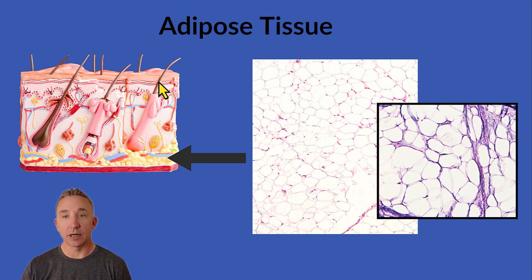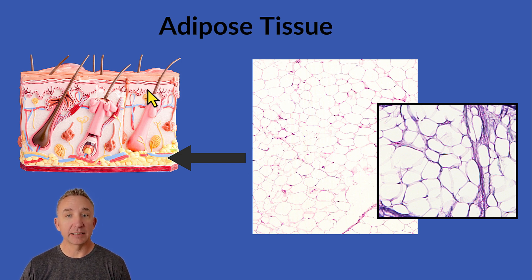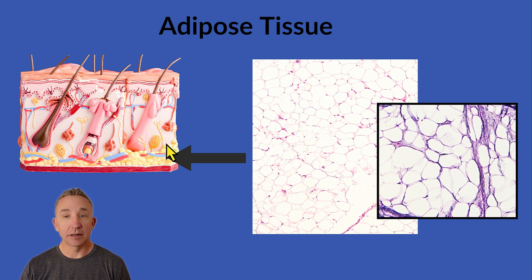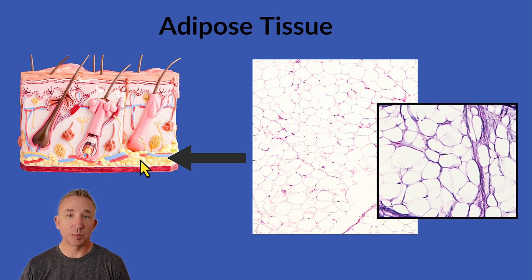We learned our epidermis is stratified squamous epithelium. We learned that the dermis contains areolar connective tissue at the papillary layer. In the reticular layer, we learned that's dense irregular connective tissue. And when we get into the hypodermis, it's primarily adipose tissue.